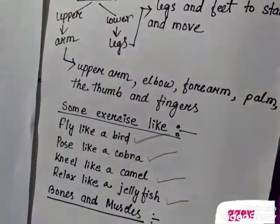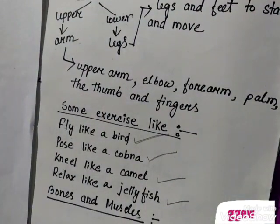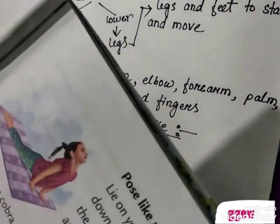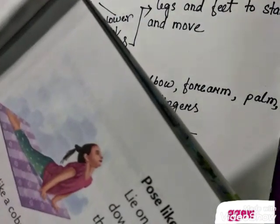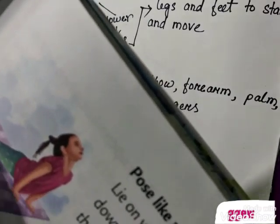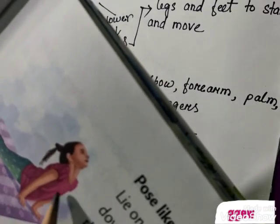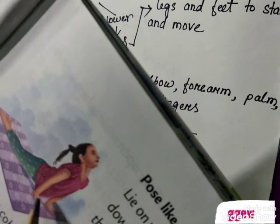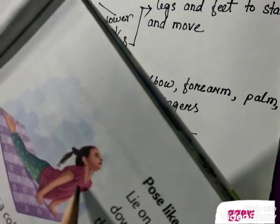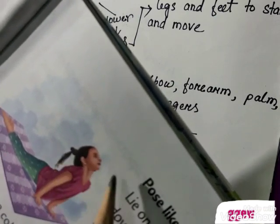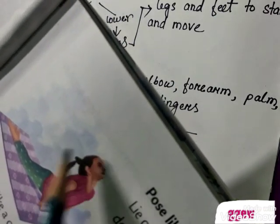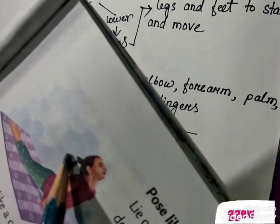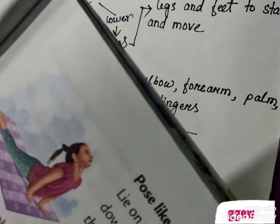Next comes the pose like a cobra. When we lie down and with the support of our hands we push our head and upper body upward — that is posing like a cobra.